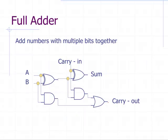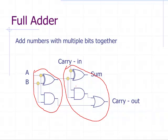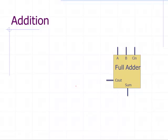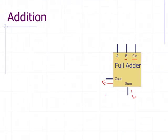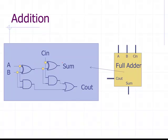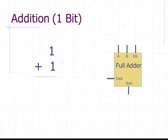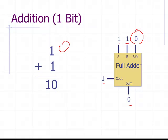To add multiple numbers together, we need to add extra circuitry for the carry-in bit. When we draw it as a block diagram, we call this a full adder — with inputs A, B, and a carry-in bit, a sum bit output, and a carry-out bit. For example, one plus one equals zero carry one. The first carry-in is zero because there's no carry-in at the start.